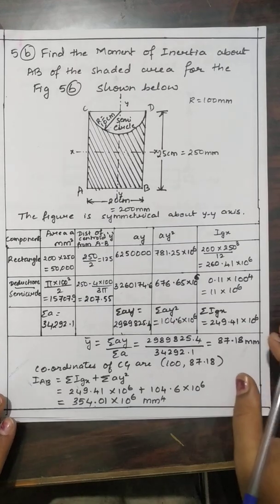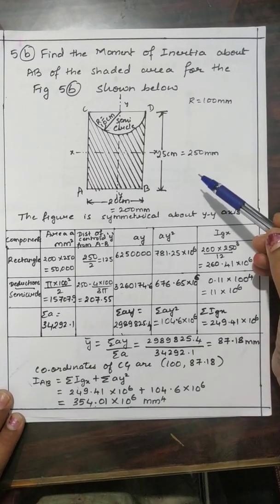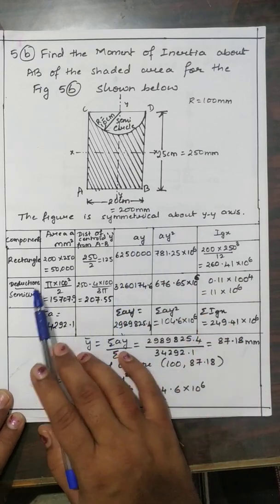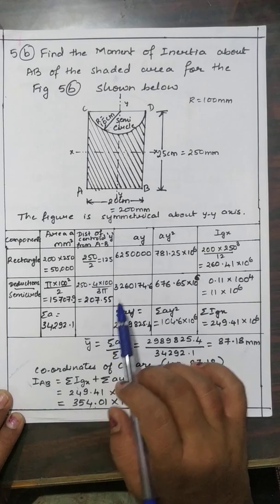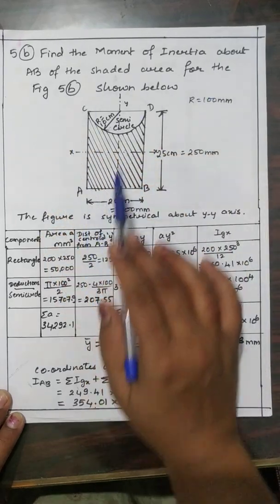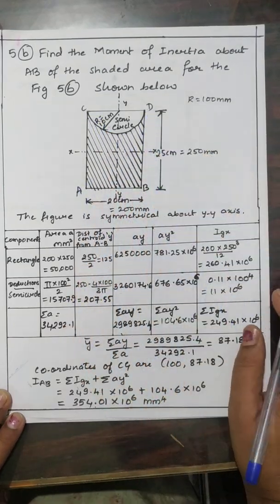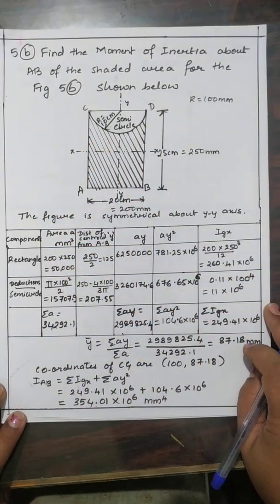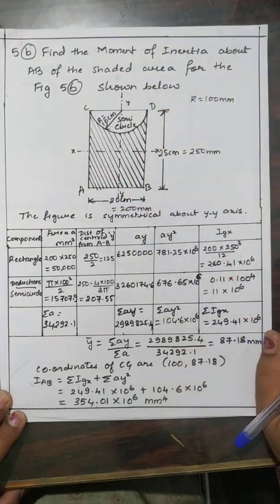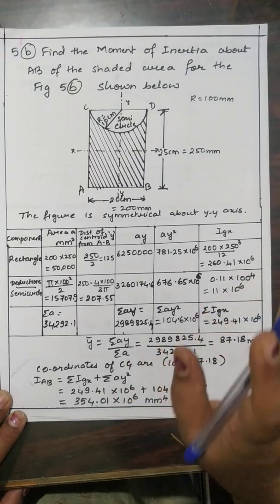Today this is a moment of inertia problem — I think it's from set two of the model question paper. The figure given has a rectangle in which a semicircle has been cut. We need to find the moment of inertia about AB of the shaded area. What we should do is take the moment of inertia of the full rectangle, then subtract the moment of inertia of the semicircle.